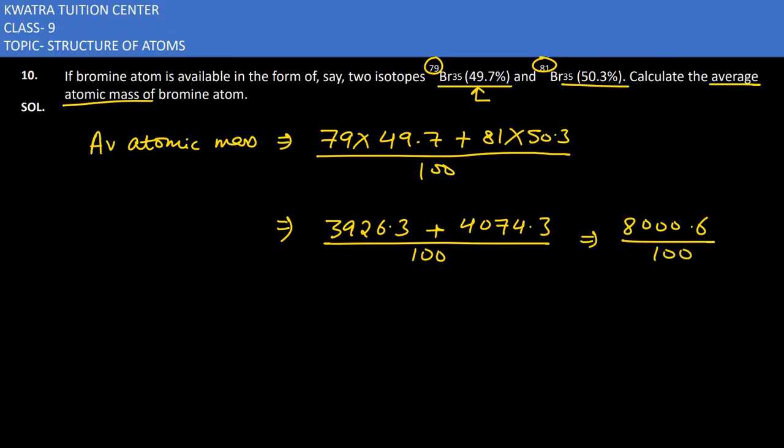So your value will be 80.006 u, and finally you can say approximately 80 u. So the average atomic mass of bromine atom in this case is specifically 80.00 u.